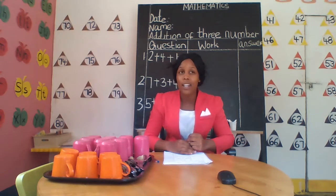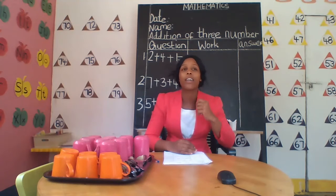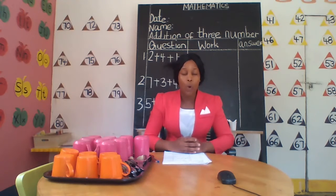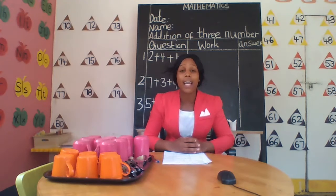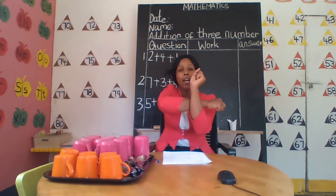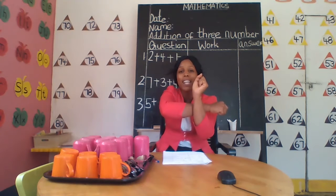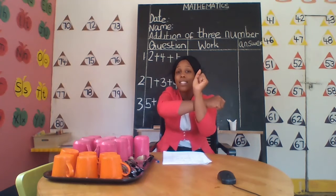Let me remind you. We have two signs. The first sign is the cross sign, which we call the addition sign — it looks like this. Can you do it like the way I do? This is the addition sign. Say: addition sign. Addition sign.